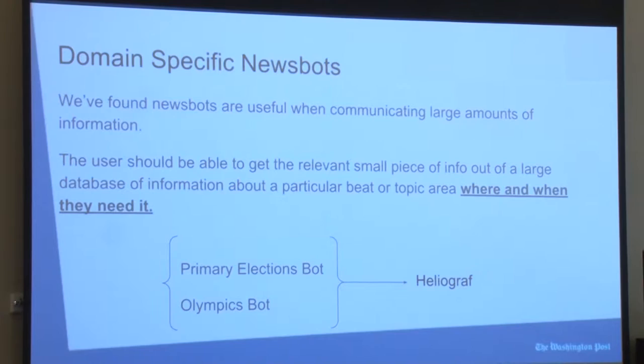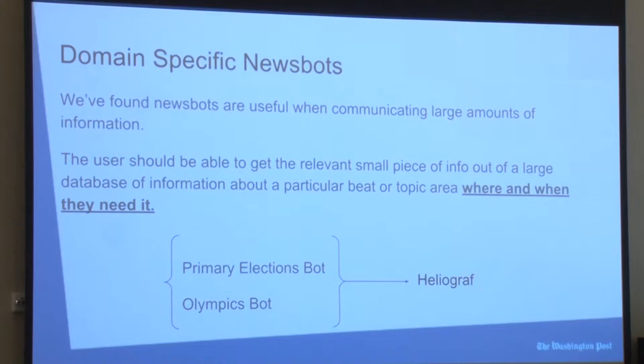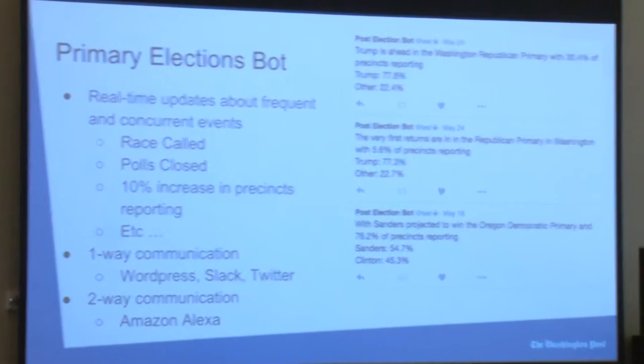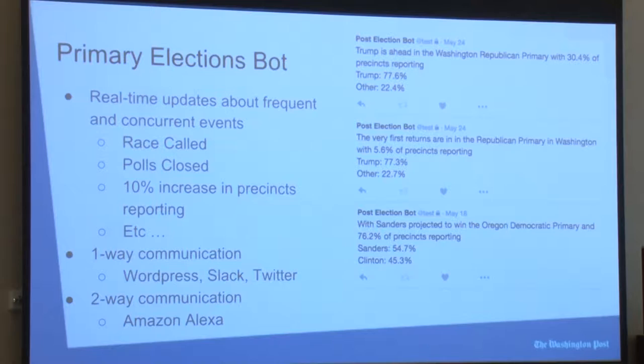At the Post, we've worked on two bots thus far: an internal primary elections bot and our first public debut with the Olympics bot. We're also working on a generalizable bot-building framework for automated reporting, which we call Heliograph. For the primaries, our bot reported on a number of different events throughout the race, such as polls closing, the first returns coming in, a race getting called, exit polls released, etc. We worked on creating a system that gave real-time updates on a number of different platforms for both one-way and two-way communication.